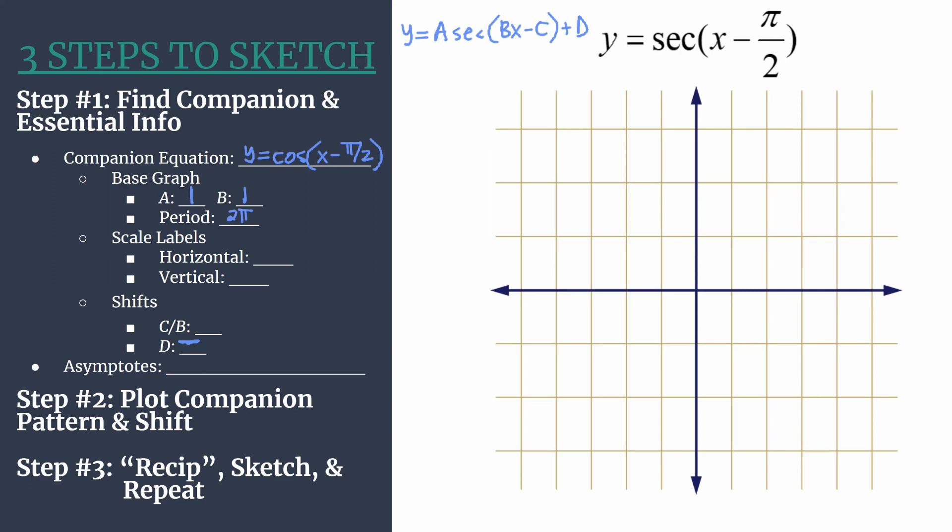Now we can choose our scale labels. Remember, you can choose any type of label for your scales. But it helps to be very intentional with your horizontal axis in particular. So take your period and divide by four. And that will ensure that your companion pattern in step two, this is before you shift, will always align nicely with the horizontal tick marks. So we're very intentional in this three steps to sketch method. Two pi divided by four simplifies to pi over two. That's how we'll count our tick marks on the horizontal axis. And for a vertical axis, one usually works well. Double check that value of A. Seems like it'll work great.